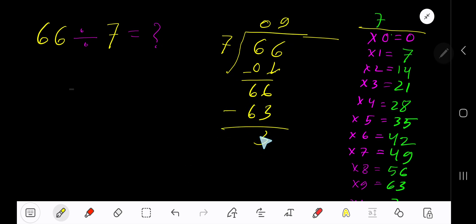Subtract and you get 3. So our answer is 9 remainder 3. If you want to write your answer in decimal form, then take your decimal and add a number of zeros.